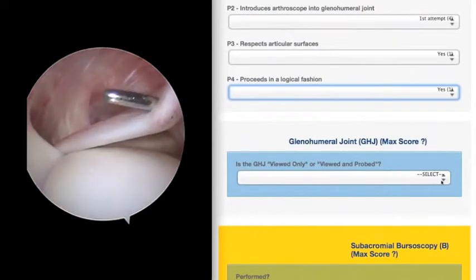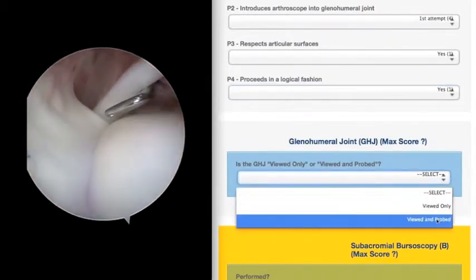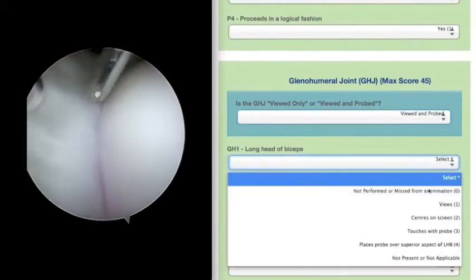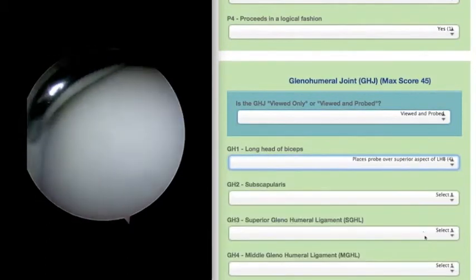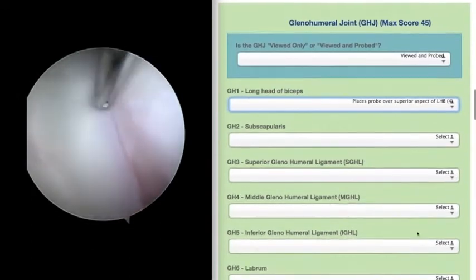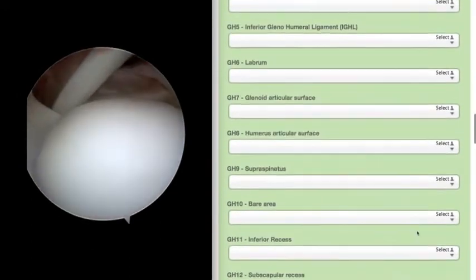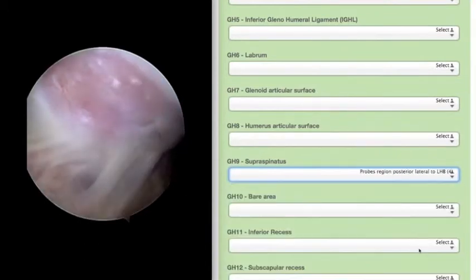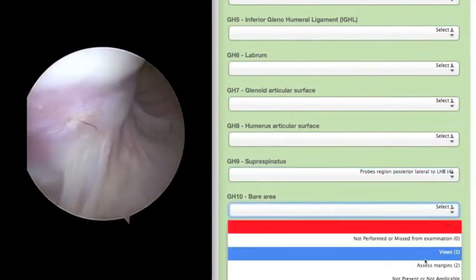Once in the joint, there is the option for a viewed arthroscopy, in which all of the anatomical structures are identified visually, or with the use of a probe, in which all of the structures are palpated. There are more points available for the probed procedure, as this is a progression from the simply viewed one.